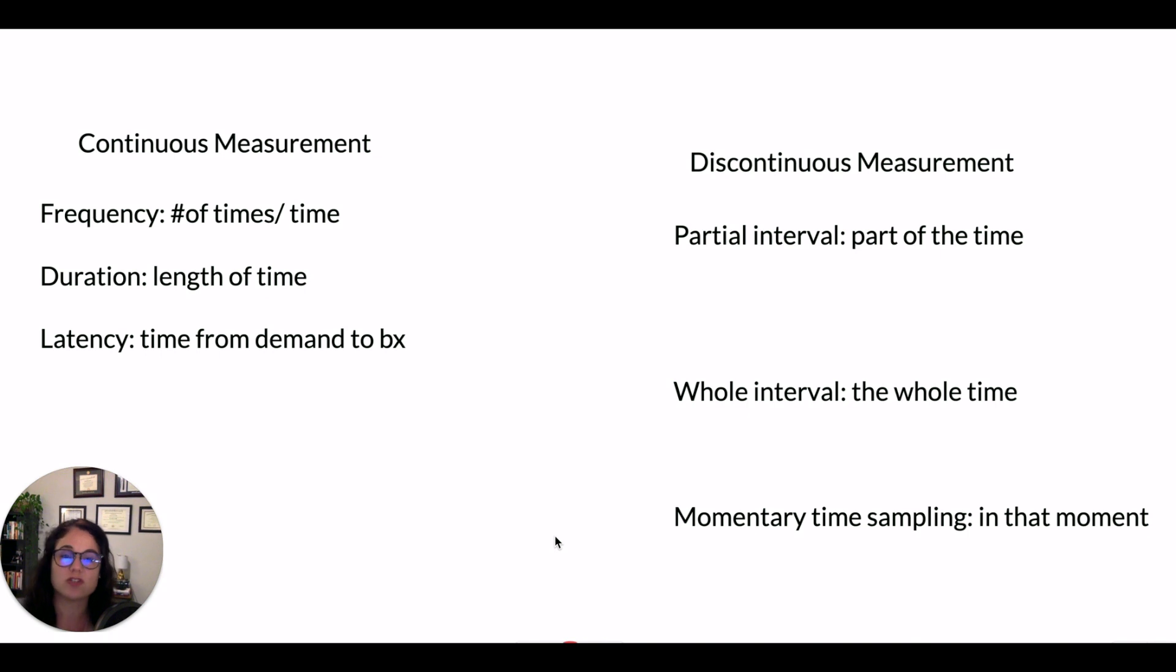Discontinuous measurement procedures. So partial interval is does the behavior happen for part of the time? It's used oftentimes for behaviors that you want to decrease. Now, not always, but a lot of times you'll see in real life application, it's for behaviors that you want to decrease. Does it happen for part of the interval?